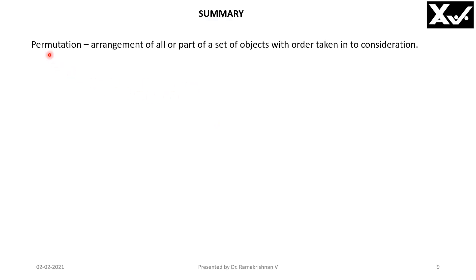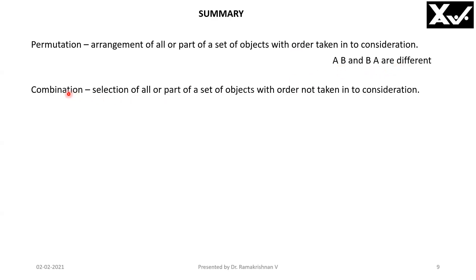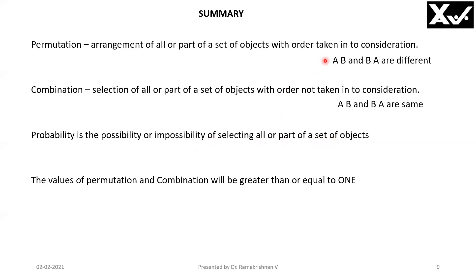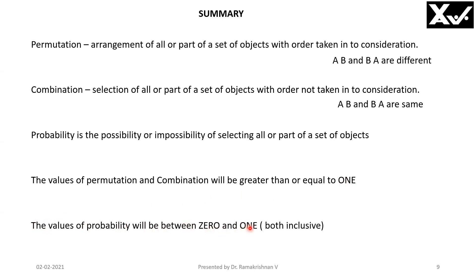In summary: Permutation is an arrangement of all or part of a set of objects with due regard to order — order is significant, so AB and BA are different. Combination is a selection of all or part of a set of objects with order not taken into consideration — AB and BA are considered the same event. Probability is the possibility or impossibility of selecting all or part of a set of objects; it is a value between 0 and 1, whereas permutation and combination values are always greater than or equal to 1.